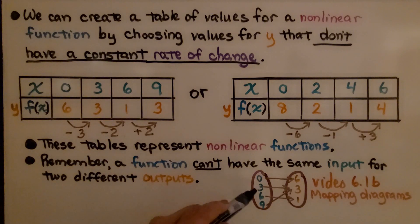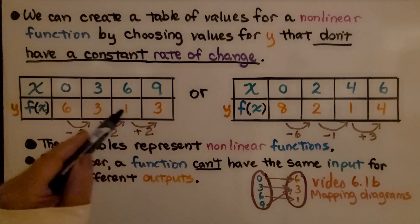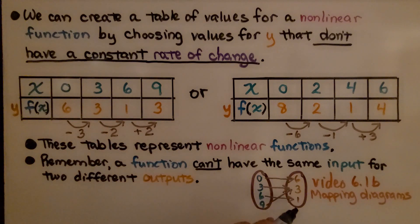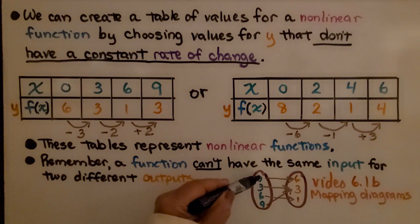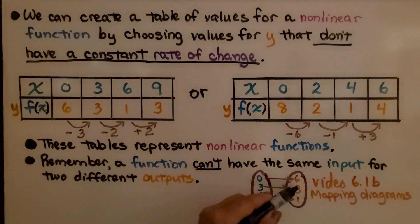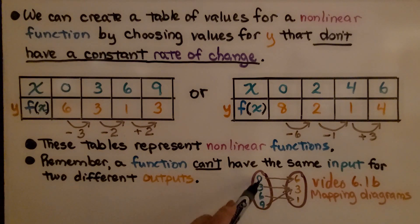For this one, we have zero, three, six, and nine for the x values. We have a three here and a three here, so we don't have to repeat it, we just make another arrow. We have six, three, and one for the y values, the f of x. This zero goes to six, this three goes to three, this six goes to one, and the nine goes to three. It's okay for three and nine to go to the same three, because it's not the same input. They can have the same output.